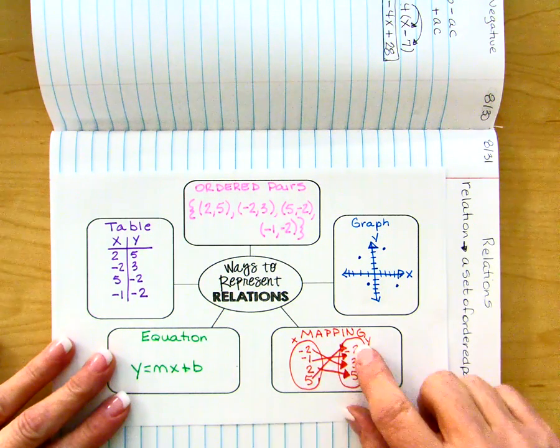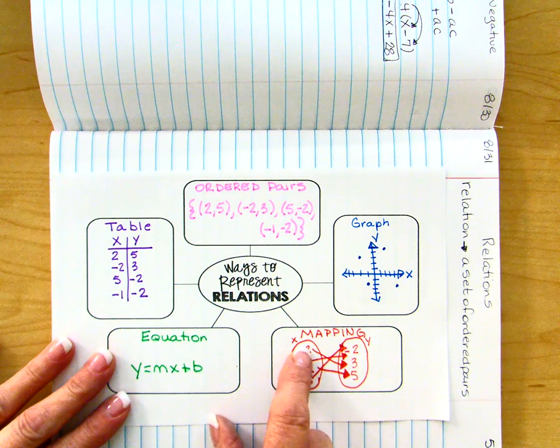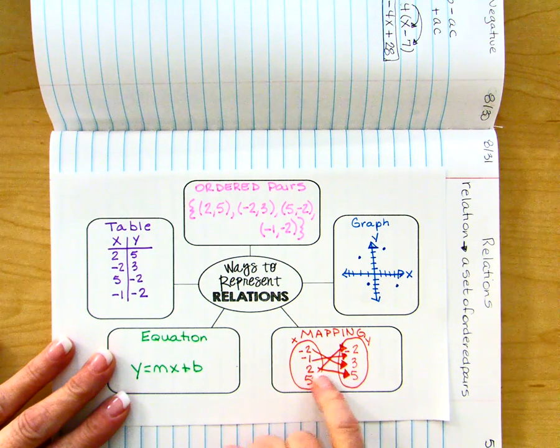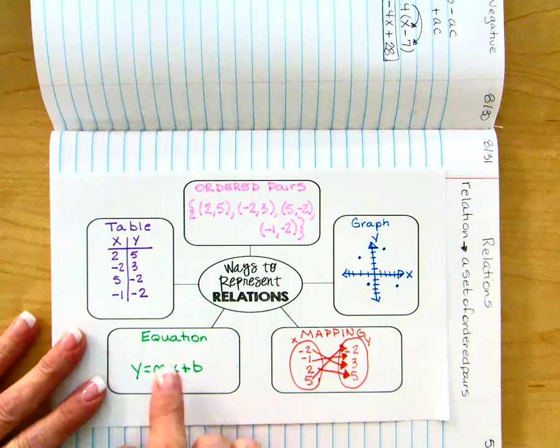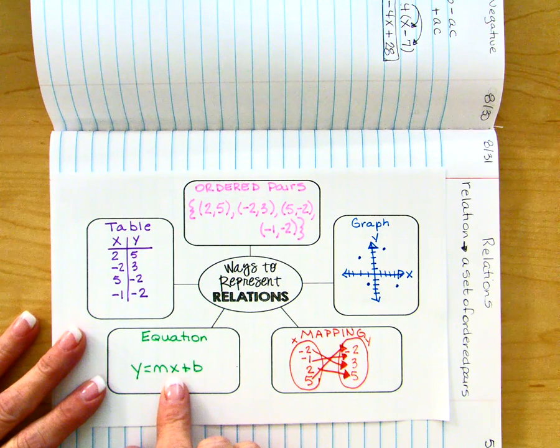So both the negative 1 and the 5 are going to this negative 2. Negative 2 maps to 3 and 2 maps to 5. We could represent a relation as an equation.